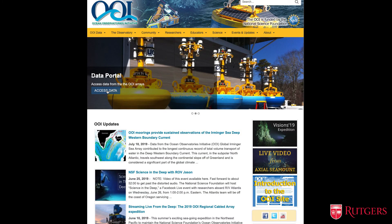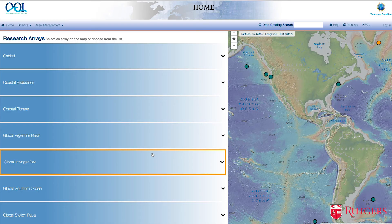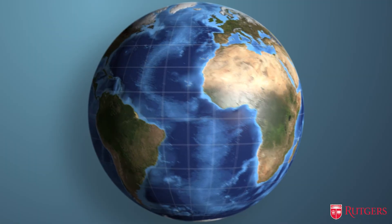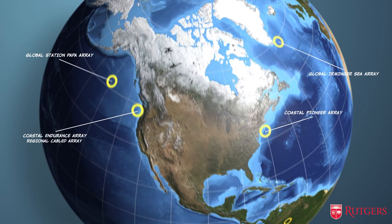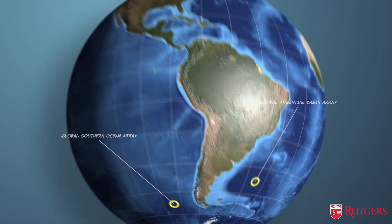The Ocean Observatories Initiative, or OOI, started in 2013 and is revolutionary. It collects an amazing amount of data. In the Pacific and Atlantic basins, scientists have set up data collection stations that use a variety of instruments that are constantly looking at the ocean.